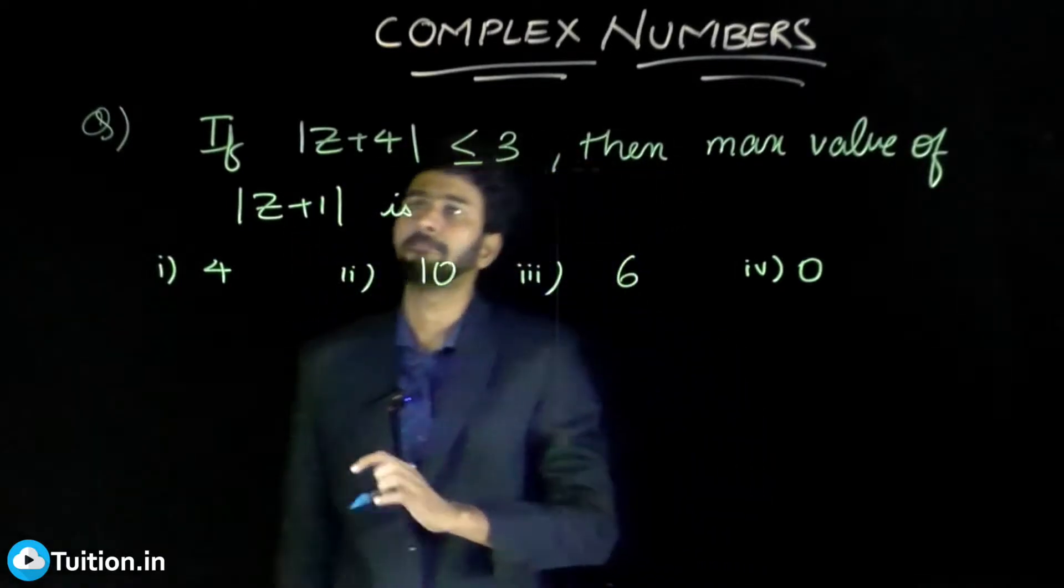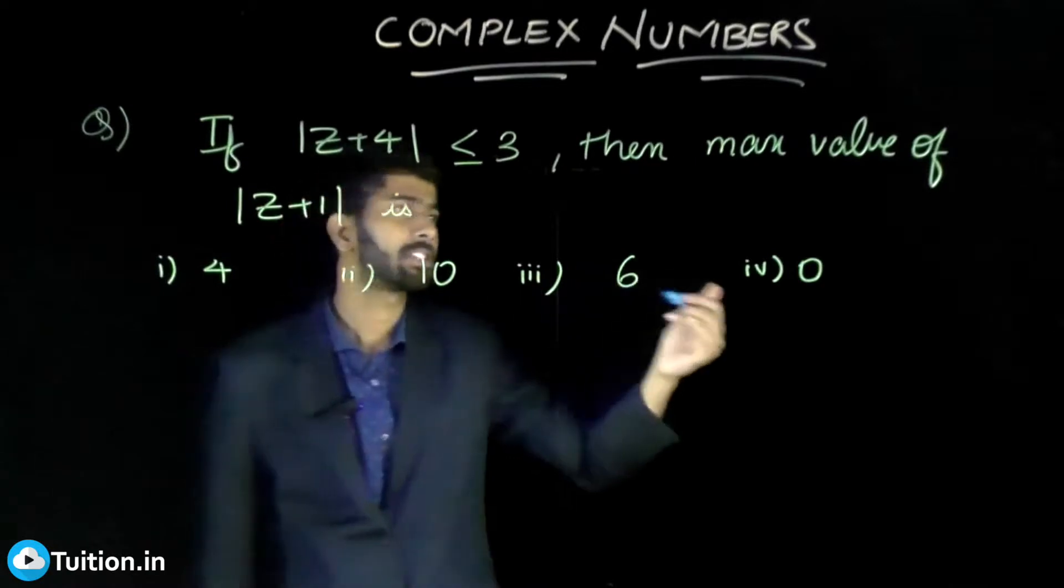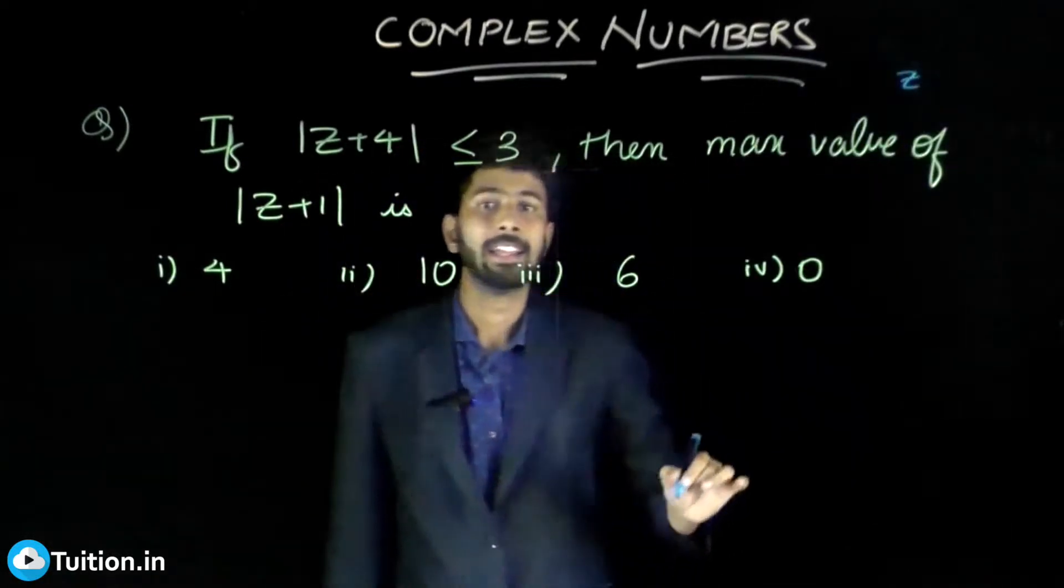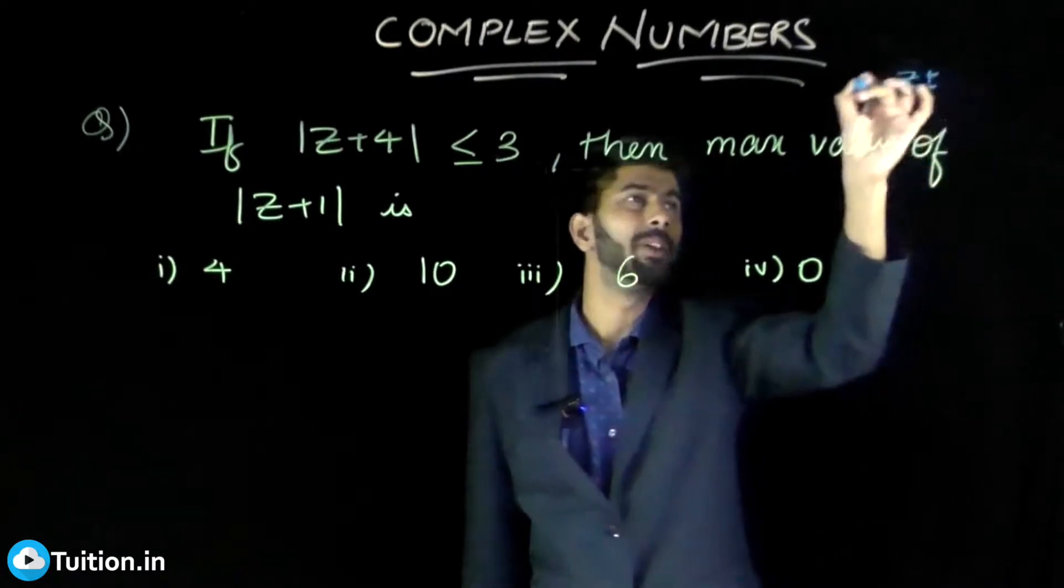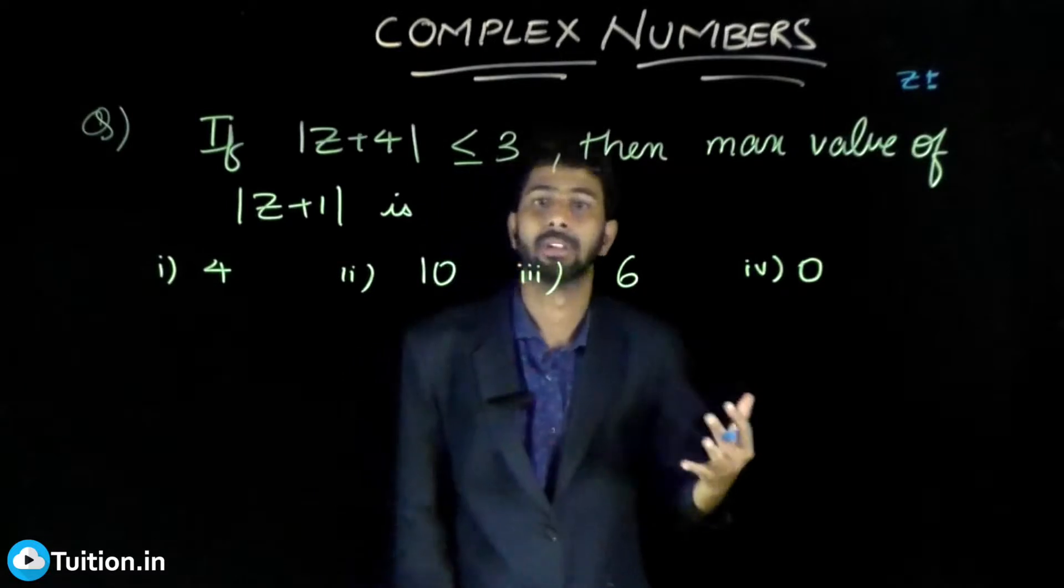Remember when you have a complex number called z, if I add something to it or subtract something from it or multiply something to it, it in turn gives me another complex number.